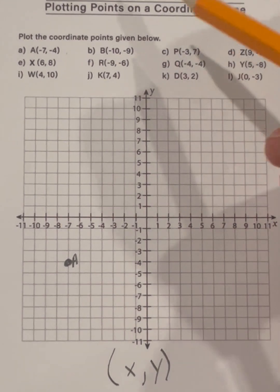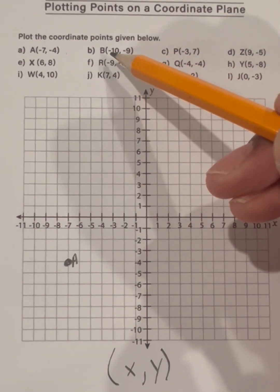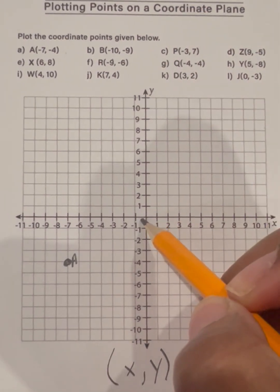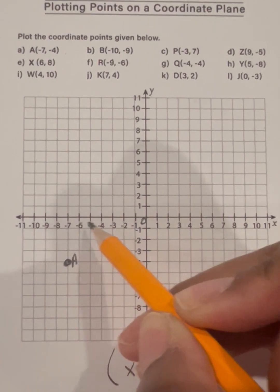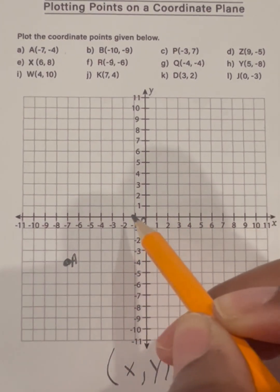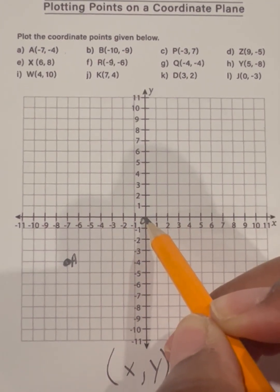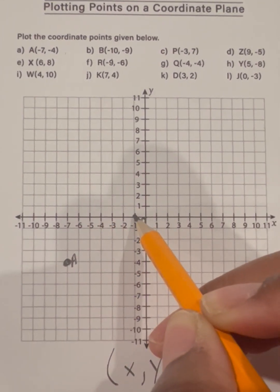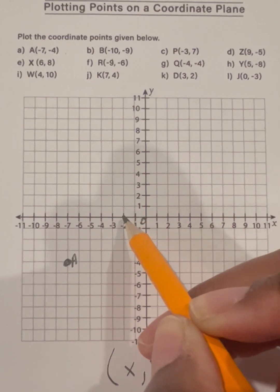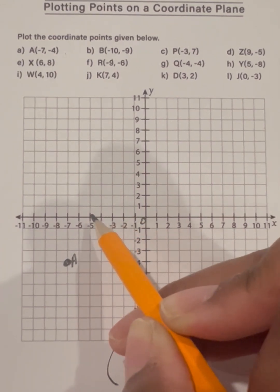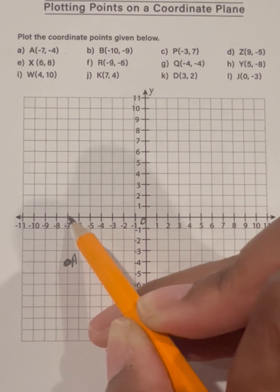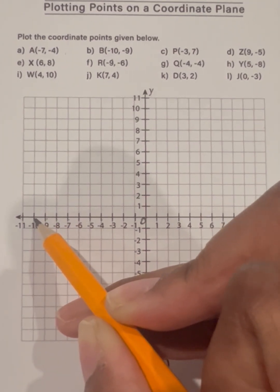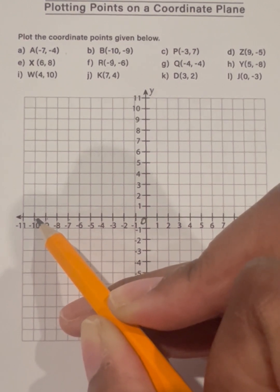I'm going to do two more. B is negative ten and negative nine. Once again, we're going to start right here in the middle at zero. Remember, the x-axis goes left to right, which is horizontal. By it being a negative ten, we're going to go to the left — negative one, negative two, negative three, negative four, negative five, negative six, negative seven, negative eight, negative nine, and negative ten.